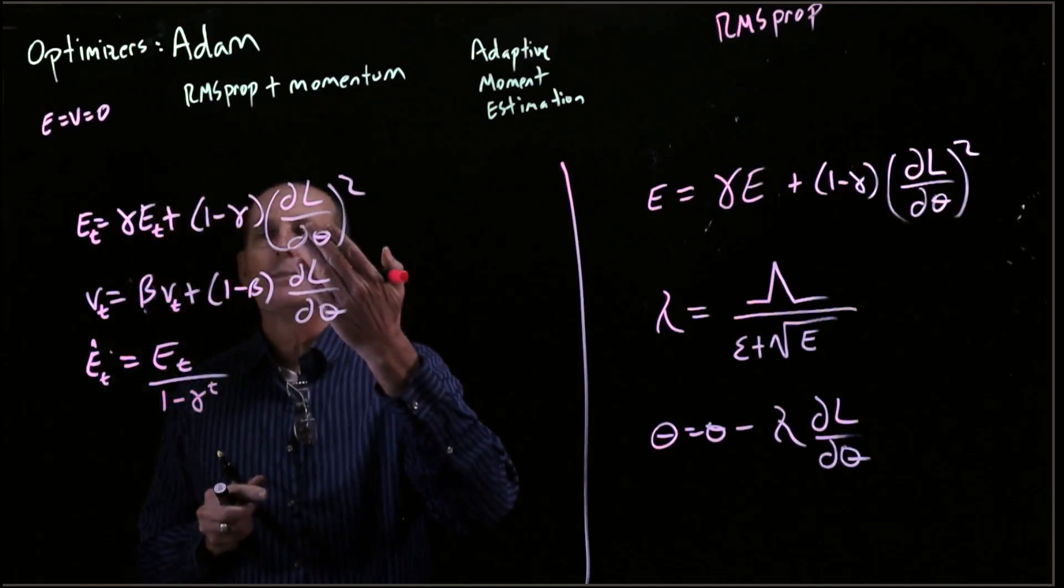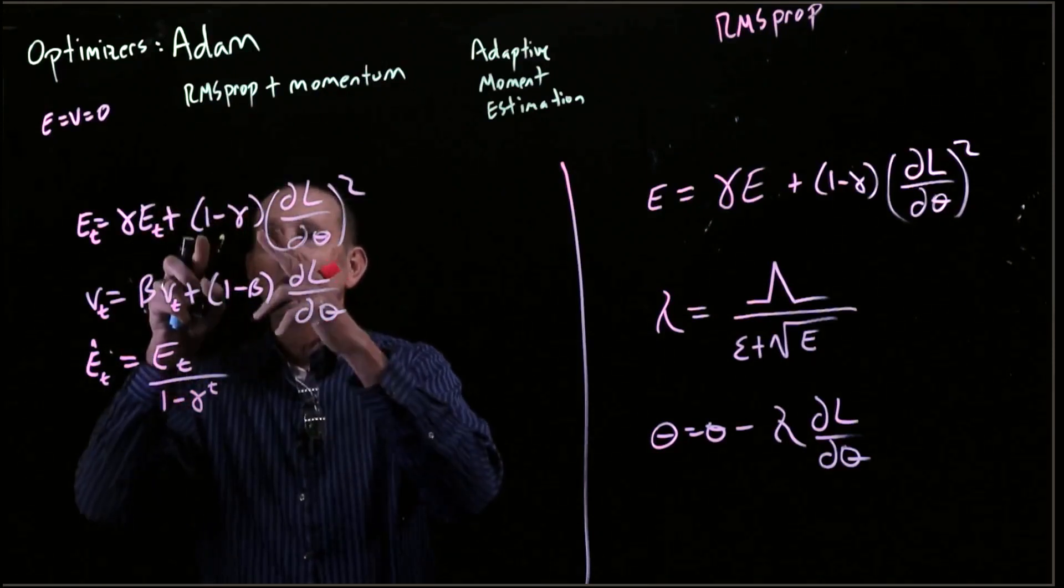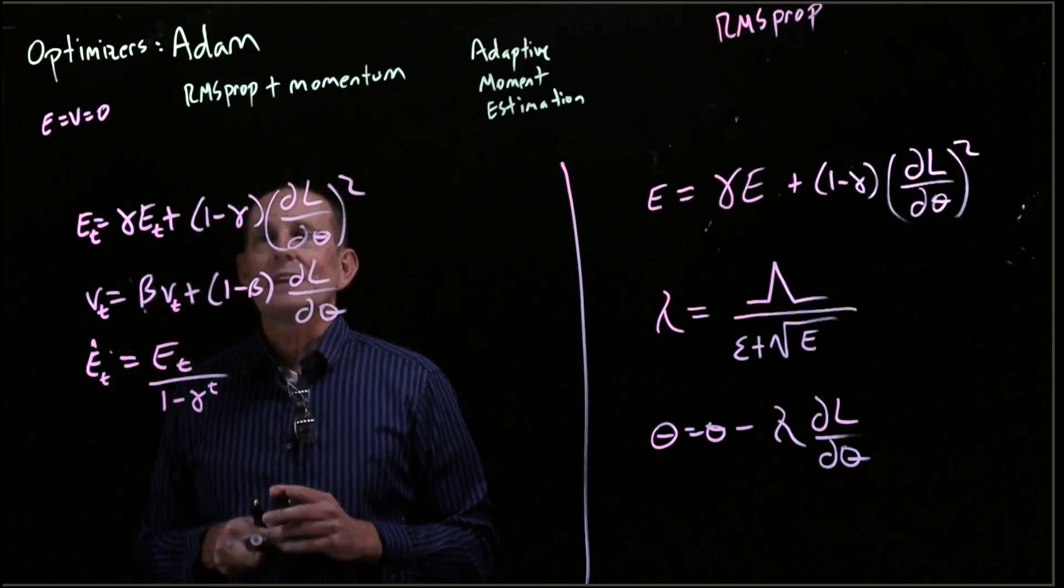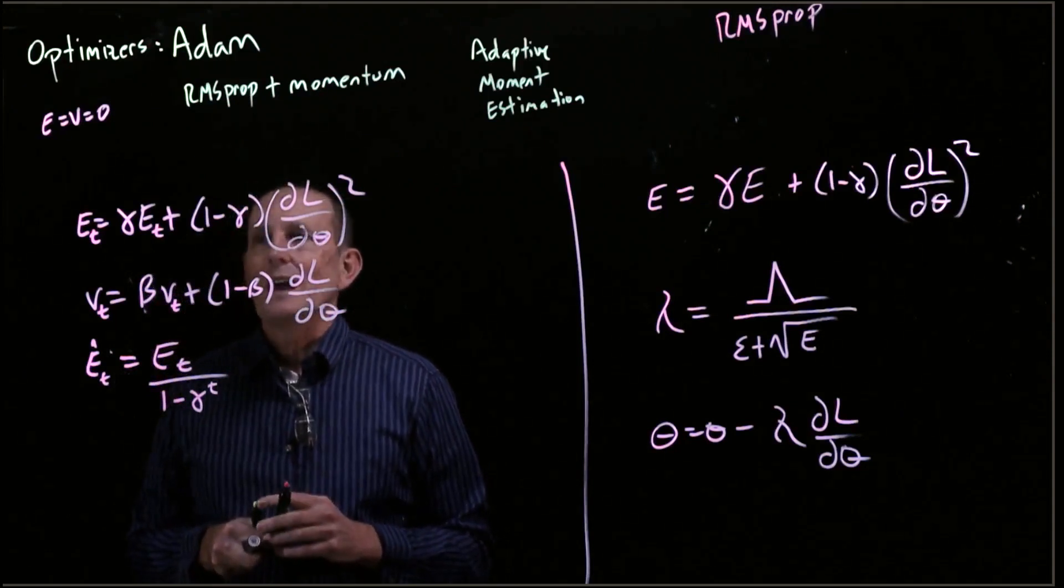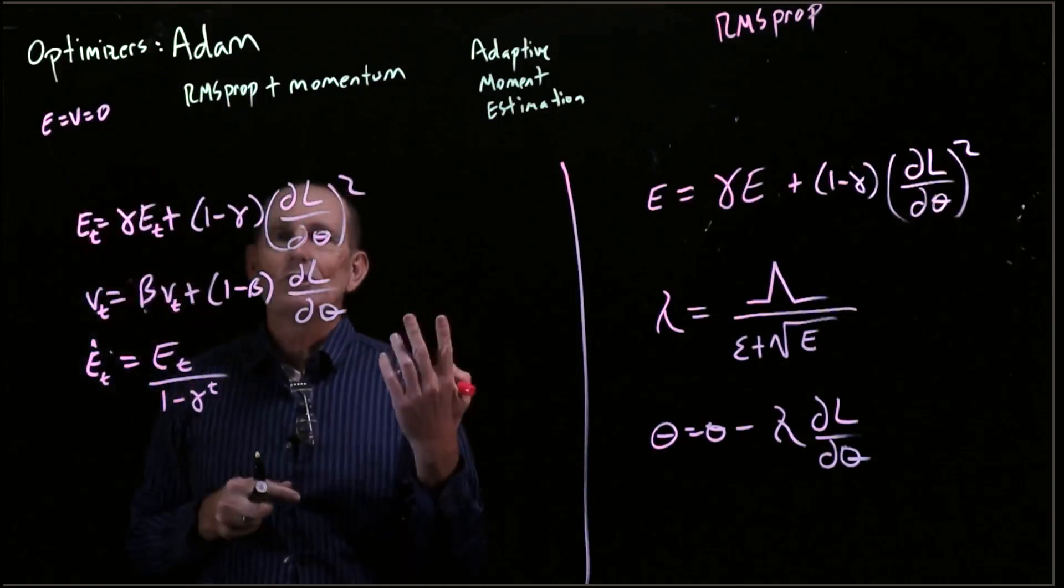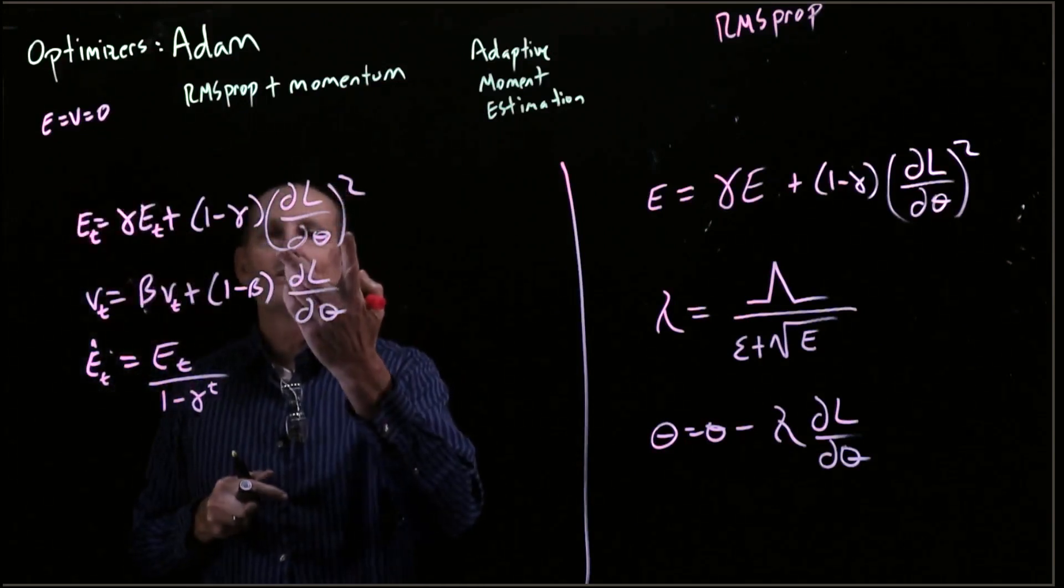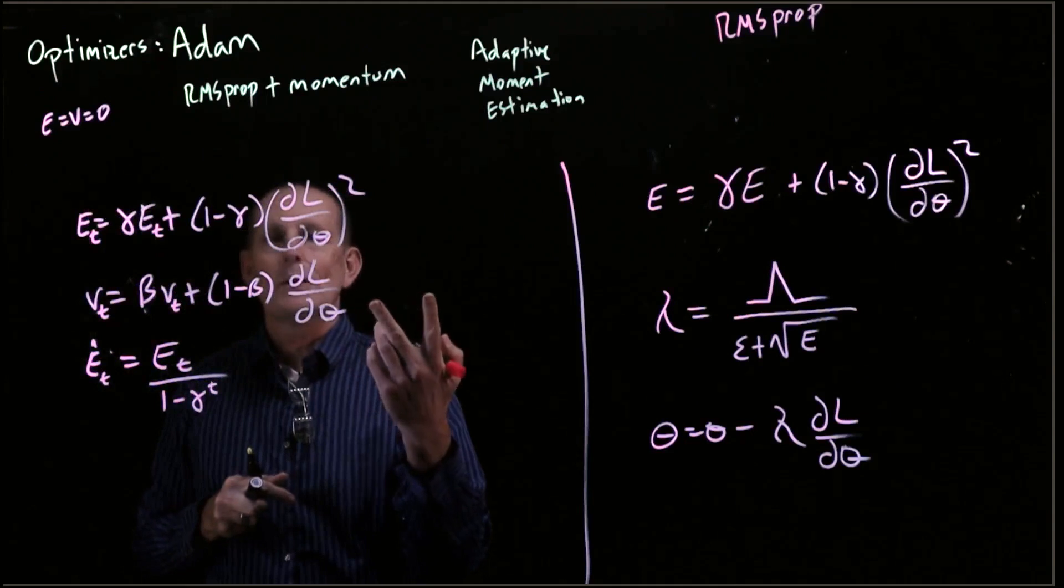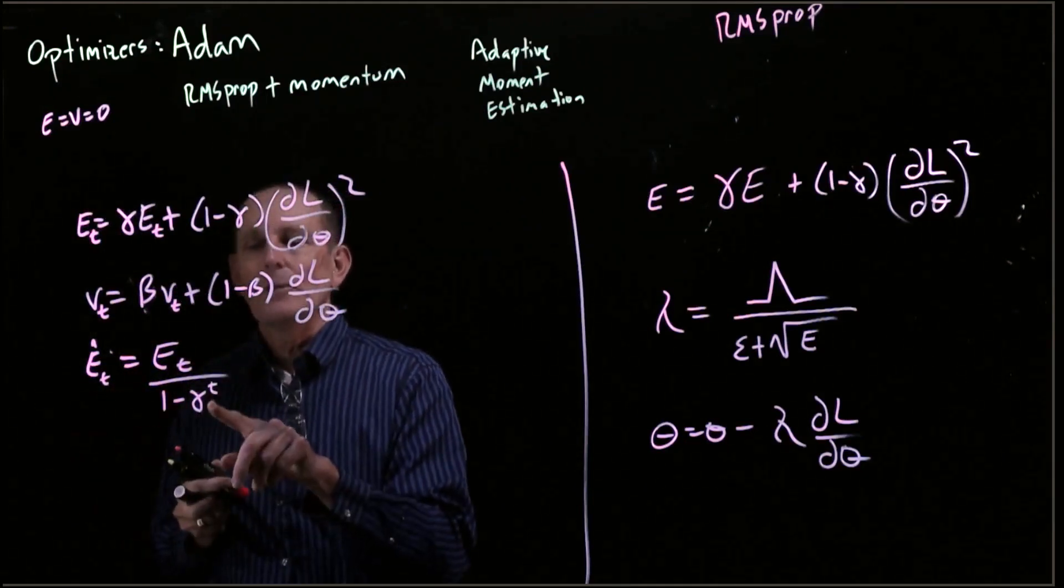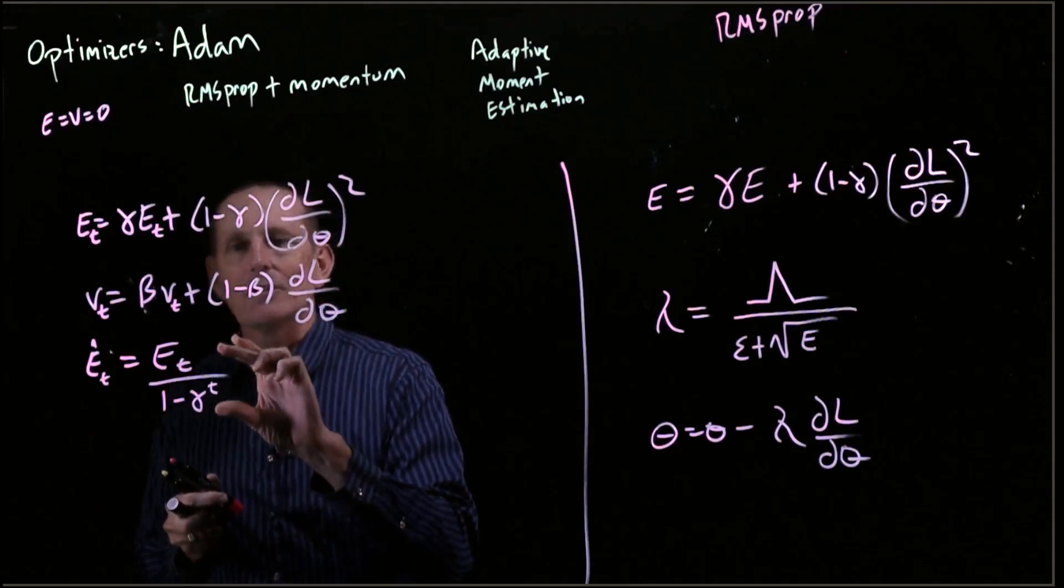So the first time through, we're going to have multiplied by 1 minus gamma. We'll also divide by 1 minus gamma. The second time through, the zero matters a little bit less. Now we have two estimations of the squared gradient, the current time step, the previous time step. We're going to have a slightly less of a correction.